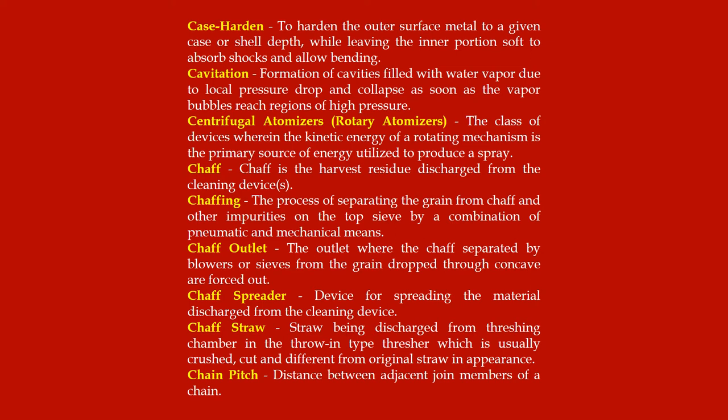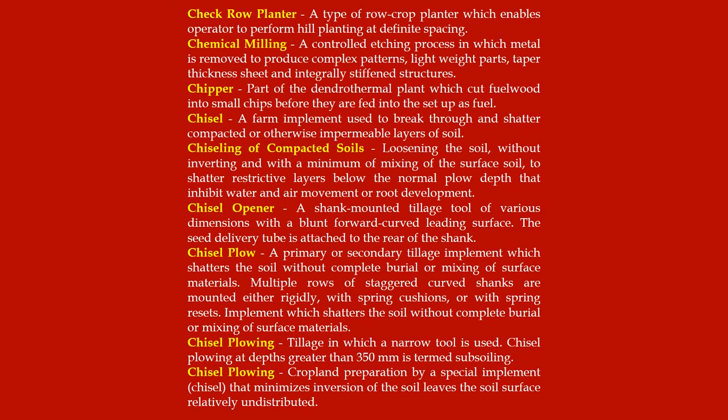Chaff straw: straw being discharged from the threshing chamber in the throw-and-type thresher, which is usually crushed, cut and different from original straw in appearance. Chain pitch: distance between adjacent joint members of a chain. Check row planter: a type of row crop planter which enables the operator to perform hill planting at definite spacing. Chemical milling: a controlled etching process in which metal is removed to produce complex patterns, lightweight parts, taper thickness sheet and integrally stiffened structures.